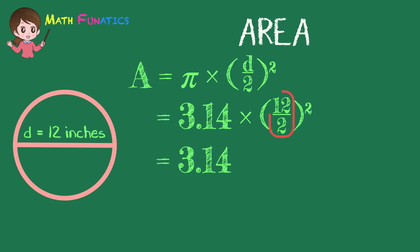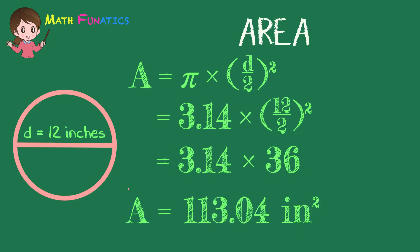Copy 3.14, then divide 12 by 2 to get 6. The square of 6, which means 6 times 6, is equal to 36. Multiply 3.14 by 36 to get 113.04. Finally, the area of a circle with a diameter of 12 inches is 113.04 square inches.